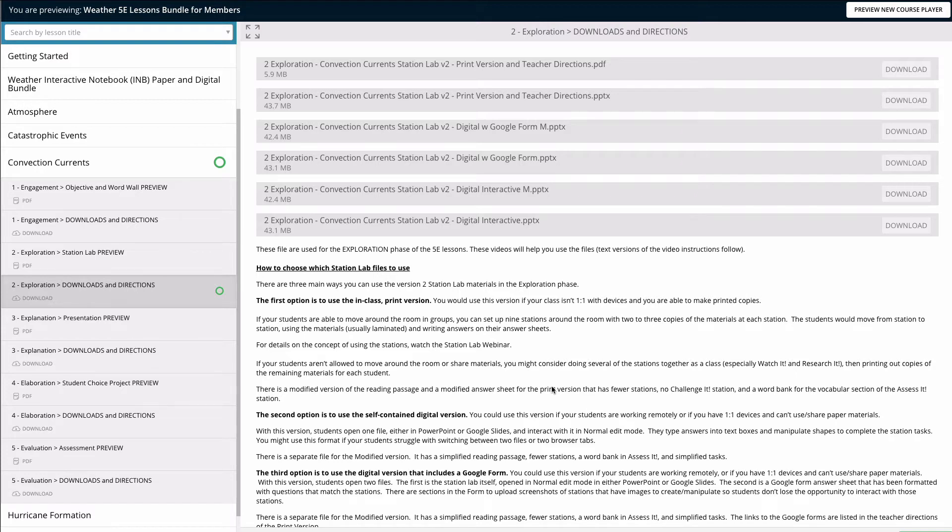To use the paper or in-class version of the StationLab, you're going to download and open the file that starts with 2 Exploration and ends with Print Version and Teacher Directions. This file comes in a PowerPoint or a PDF.